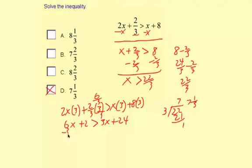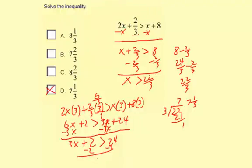Now I'm going to subtract 3x from both sides. So I'm going to get 6x minus 3x is 3x plus 2 greater than 3x minus 3x is 0, and then 24. Subtract 2. We're going to get 3x greater than 22.